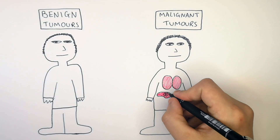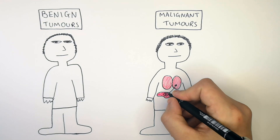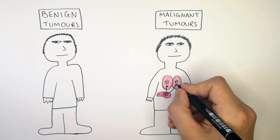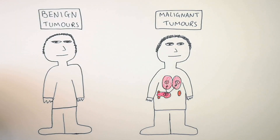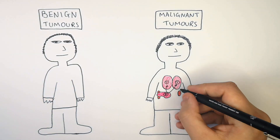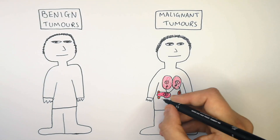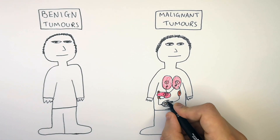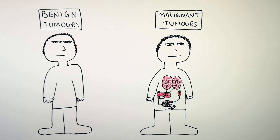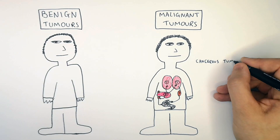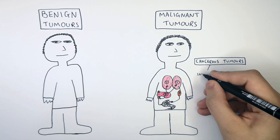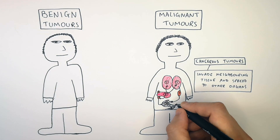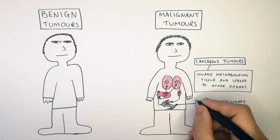A malignant tumor is going to spread to other organs and other tissues, forming tumors in other organs and other tissues. So this tumor that formed on the liver has now spread via the blood to the lungs, the kidneys, and the large intestine. Malignant tumors are what we call cancerous tumors — they invade neighboring tissue and spread to other organs, forming secondary tumors.